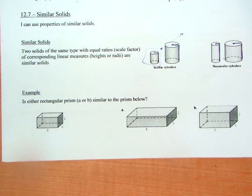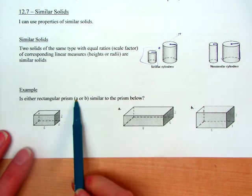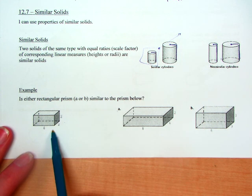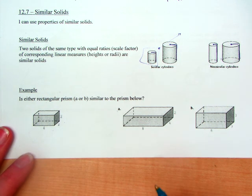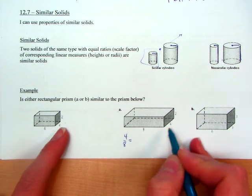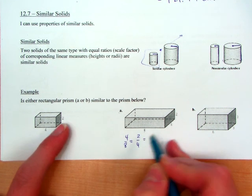So the first example we have says is either rectangular prism A or B similar to this guy. And the way that you test similar is just to make sure that all of the sides that match up have the same ratio. So for these two, it's going to be the 4 and the 8, the 2 and the 4, and the 2 and the 2.